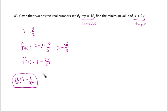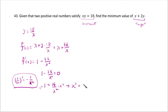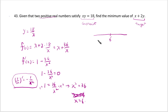We want to find the critical numbers, so we set f'(x) = 0. You get 1 = 36/x². Multiply both sides by x² to get x² = 36, which gives x = ±6. Since the problem says positive real numbers, negative doesn't work, so we only need x = 6. So x = 6 is our critical number.